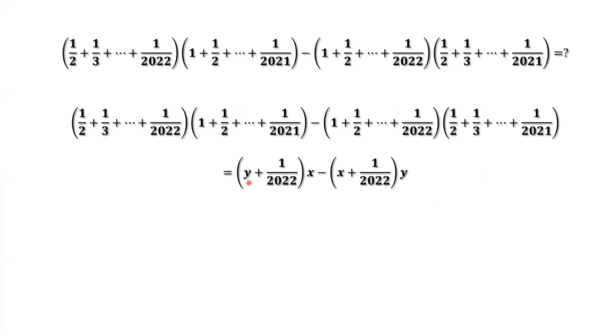We simplify this to have a result here. Continue to simplify. You can see x, y and a negative x, y can be canceled. Then we have the common number, 1 over 2022. Factor this out. Then you have x minus y. What is x minus y? Equals 1. So we have the final answer.